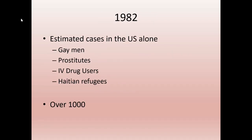In 1982, the estimated cases in the U.S. were found in just four groups, with over 1,000 cases. What we now understand is the reason it was first detected in the gay community was that none of those four groups had major power or influence in the United States at the time. Of those four disempowered groups, gay men were the only group that had access to health care.